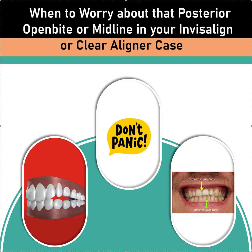Let's talk about the stages of braces: number one is level and align, number two is space closure and bite correction, and number three is finishing and detailing — which often isn't even done anymore, because if you place the braces right with indirect bonding you really shouldn't need it, or maybe you'll just finish and detail with some bonding wires and let the bite settle. Hopefully that was helpful — take care!